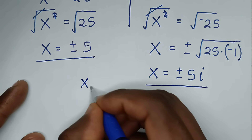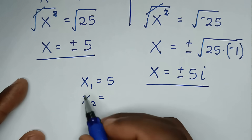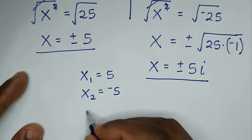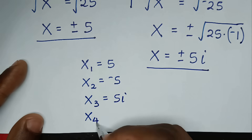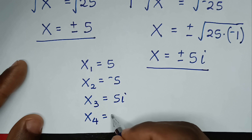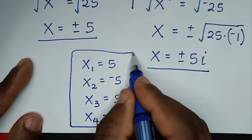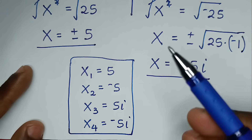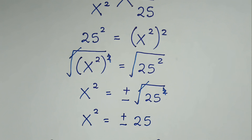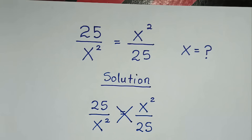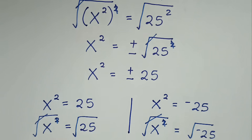Therefore our conclusion: the first value of x is 5, the second is negative 5, the third is 5i, and the fourth is negative 5i. So we have four values of x. This second method is the simpler approach. Thank you, don't forget to subscribe to my channel, and see you in the next video — bye bye!